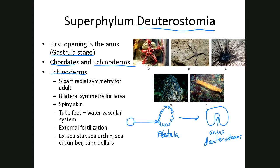Let's talk about what echinoderms actually are. These guys are invertebrates — obviously we're vertebrates. They do not have an endoskeleton or a vertebral column, but they do have five-part radial symmetry. You can see from this sea star that it can be broken up into five equal parts — you see those five arms there — and that's in the adult form.